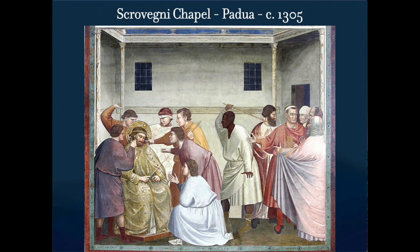Giotto also took bold steps in foreshortening — if someone is holding a hand pointing toward you and you have to paint that in a way that doesn't look weird, it's really difficult. It's much easier to paint a flat profile than something coming at you in three-dimensional space. The figures occupy compressed settings, often using perspective devices so they resemble stage sets, and he arranges figures so the viewer appears to have a particular place and even involvement — he's starting to invite us into the action of a painting.